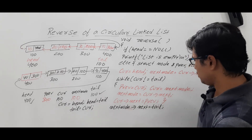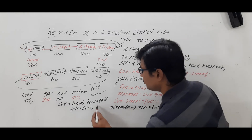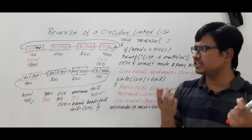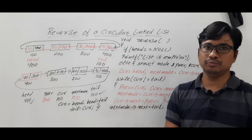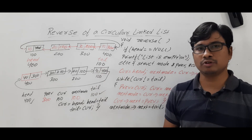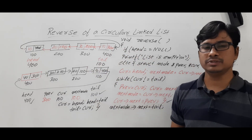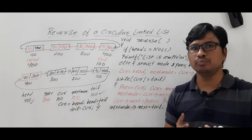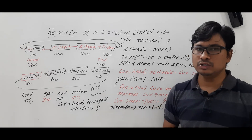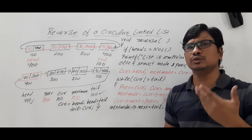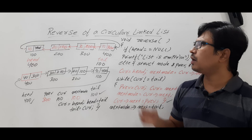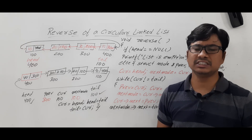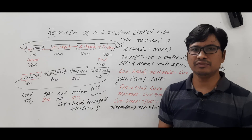Now close the while loop and close the function. This is the way we reverse a circular linked list. I hope you have understood — it is very simple if you understand the logic. I request everyone to practice these programs and understand the logic, because data structures is a very important course for placements and for competitive exams such as GATE, UGC NET, or ISRO. If you still have any doubts, feel free to ask in the comment section. Thank you for watching the complete video.